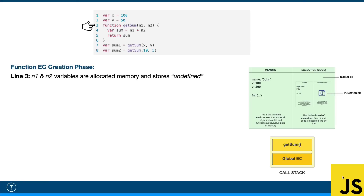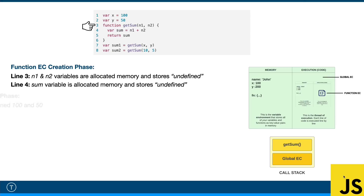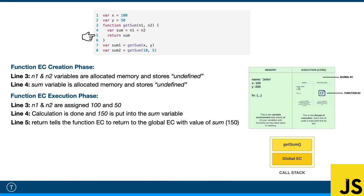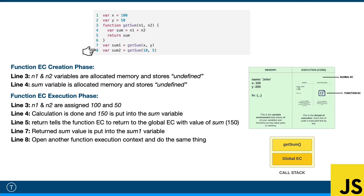We start the creation phase for the function. It takes n1 and n2, which are arguments but are variables, so they get stored and set to undefined. The sum variable also gets allocated and stored as undefined. Then the execution phase for the function starts — it assigns n1 and n2 to 150 because we passed in x and y, which are 100 and 50. It does the calculation on line four, puts the result into the sum variable, and then returns from the function execution context back to the global with the value of sum, which is 150. That result is stored into sum1, and then we move to line eight and do the whole thing over again with a new execution context.